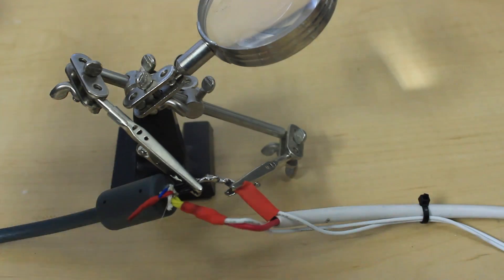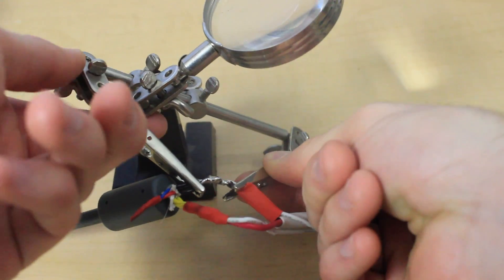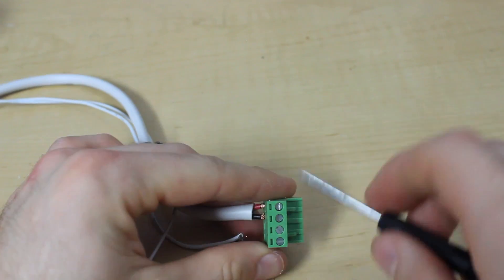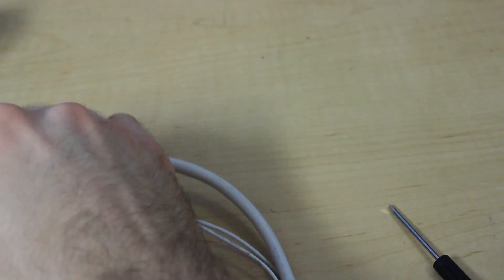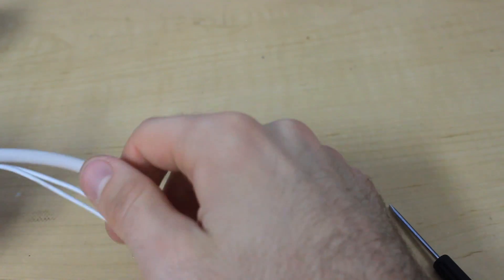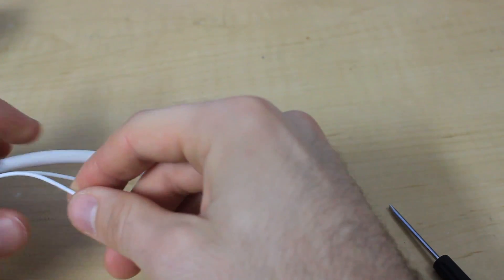So once you've done that, just cover it up with some heat shrink tubing or electrical tape, just something so that way it's not all exposed. Then just take the RepRap plug and basically plug it in in order from left to right. The thick red, the thick black, the thin red, and the thin black.